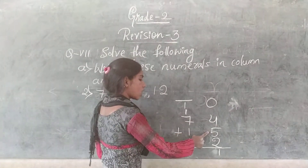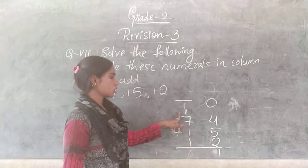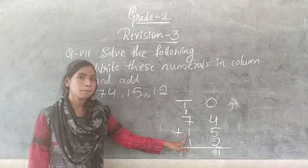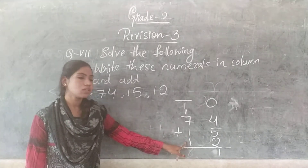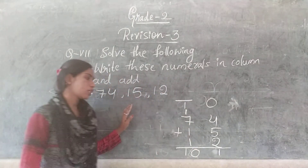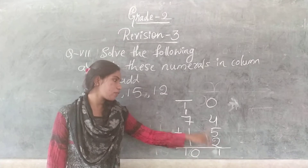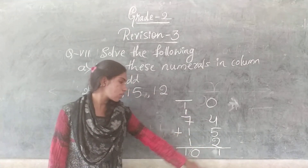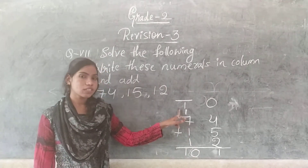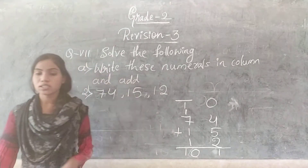Now for the 10s column: 7 plus 1 is 8, plus 1 is 9, plus carry 1 is 10. Write 0 and carry 1. So the answer is 101.